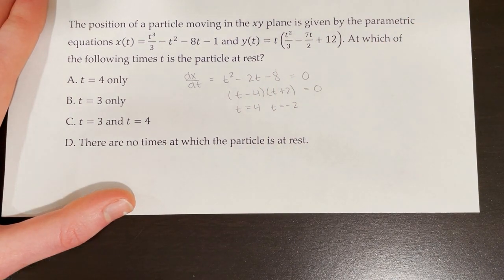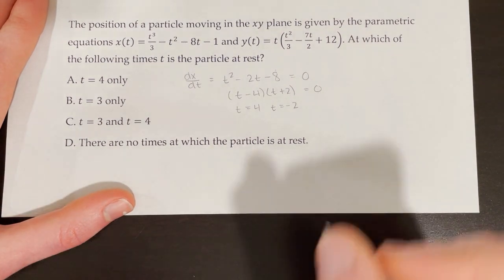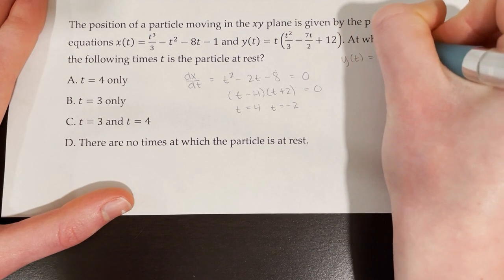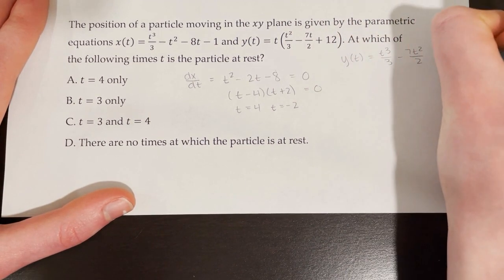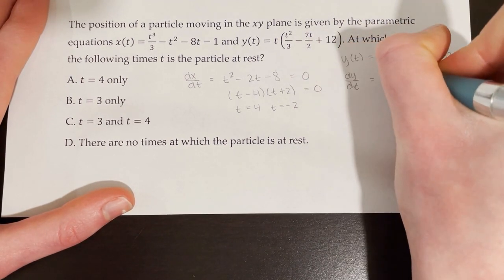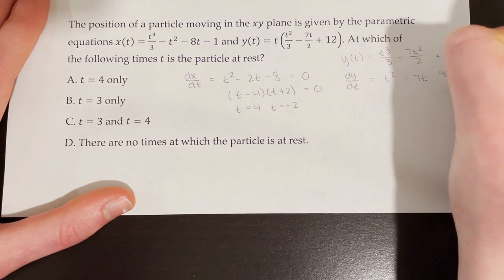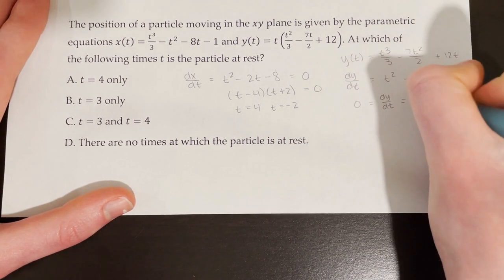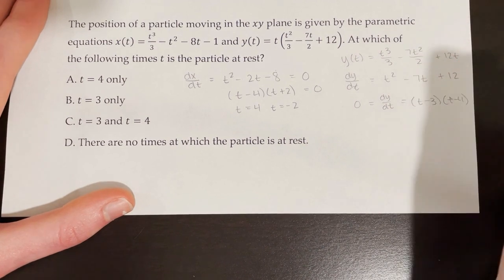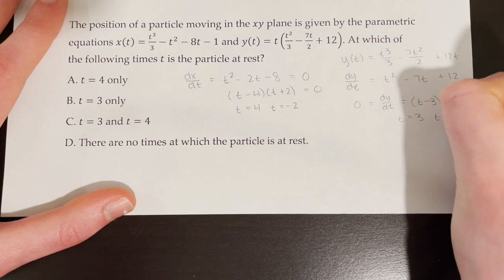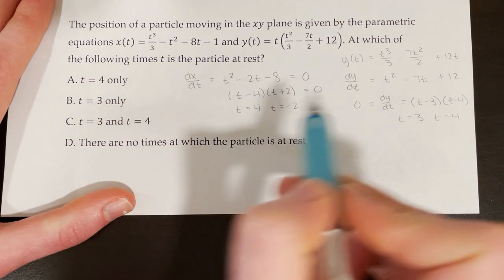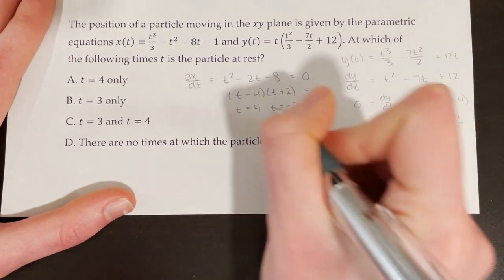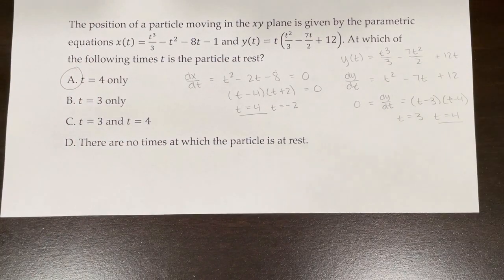These are the times when the x coordinate is not changing. For the particle to be at rest, we also need dy/dt to equal 0. Distributing t first: y of t equals t³/3 − 7t²/2 + 12t. Then dy/dt equals t² − 7t + 12, which factors as (t − 3)(t − 4), giving t equals 3 and t equals 4. The only time shared between both sets is t equals 4. Therefore, choice A is correct — only at t equals 4 is the particle at rest.